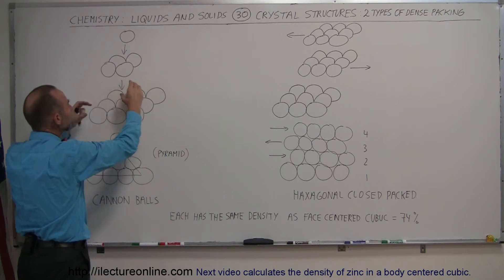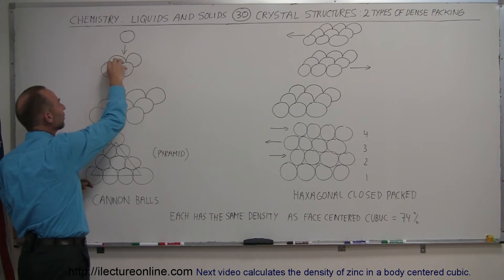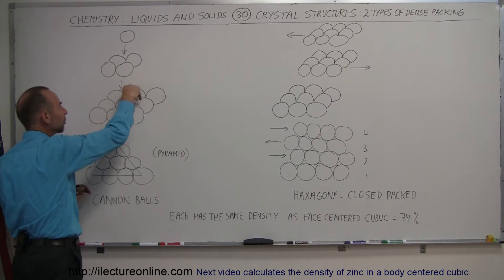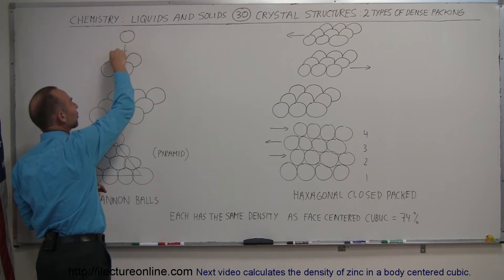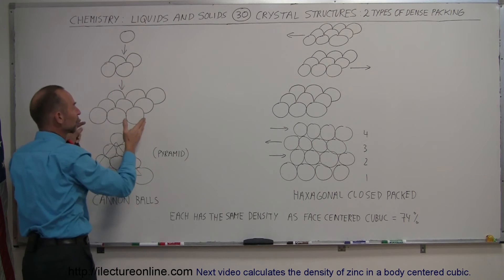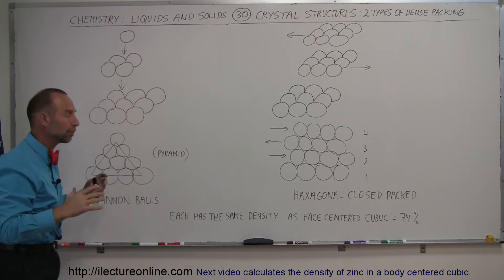Then we put a second layer on top of that, and notice that the balls in the second layer go right in the depressions of the first layer. Then the third layer, the balls go right in the depression of the second layer, and so forth. And of course, we just have a small little pyramid here, but you have the idea.